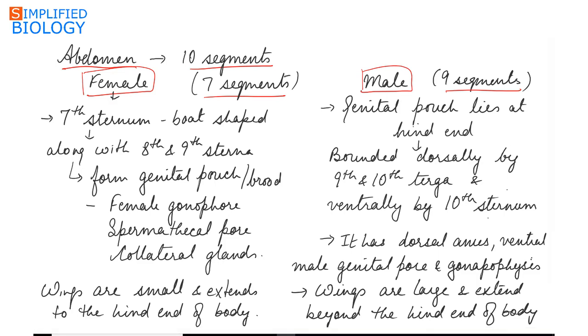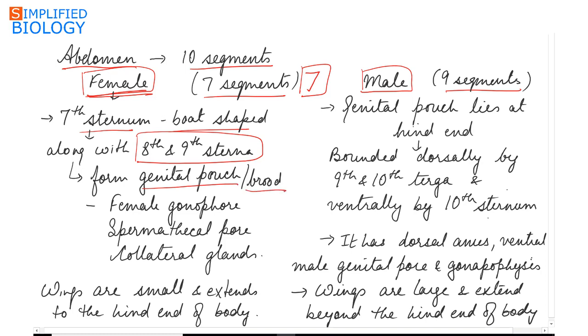Of the 10 segments, the seventh sternum is the largest. In females, the seventh sternum is boat-shaped. Along with the eighth and ninth sternum, they form the genital pouch, also known as the brood, which consists of the female gonopore, spermathecal pore, and collateral glands.